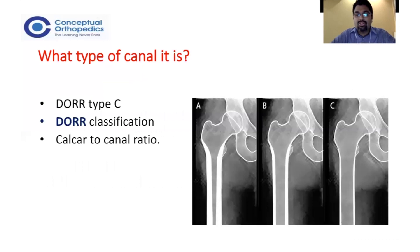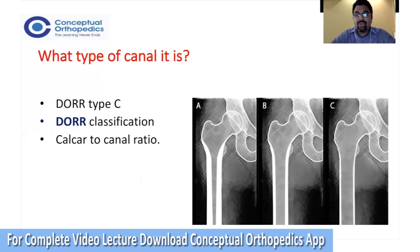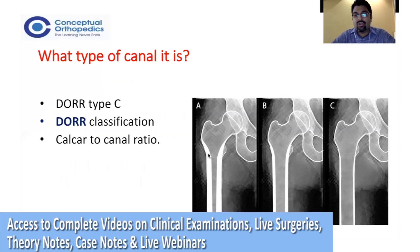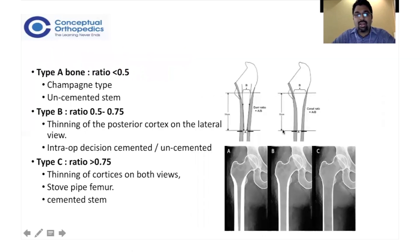Femoral stems are classified using the Dorr classification into three types: A, B, and C. This is based on the geometry and degree of osteoporosis of the proximal femur — specifically the thickness of the cortices. To classify further, we use the calcar-canal ratio: the diameter of the femoral canal at 10 cm from the lesser trochanter (A) divided by the diameter at the level of the calcar (B). If this ratio is less than 0.5, it is called a champagne-type femoral stem, suited for uncemented fixation due to good proximal purchase.